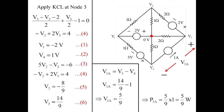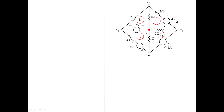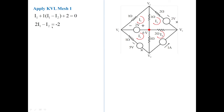We will now check the same problem using mesh analysis. There are four meshes, giving four loop currents I1, I2, I3, and I4, all assumed clockwise. Applying KVL to mesh 1: 1·I1 + 1·(I1 − I2) + 2 = 0, which simplifies to 2I1 − I2 = minus 2 (equation 1). Applying KVL to mesh 2 gives equation 2: minus I1 + 5I2 − 2I4 = 2.